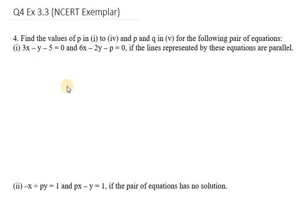Hello everyone. Let's start with question number 4 of exercise 3.3. In this we need to find the values of P in parts 1 to 4, and we need to find the values of P and Q in part 5 for the following pairs of equations. From the first part, we have 3x minus y minus 5 equals 0 and 6x minus 2y minus P equals 0, and the condition given is that the equations are parallel.